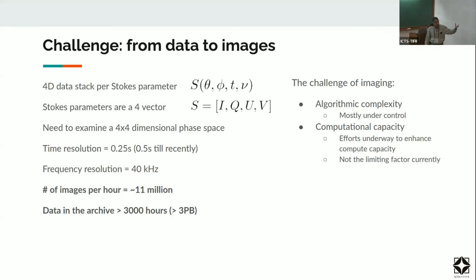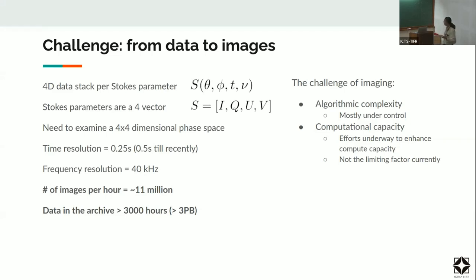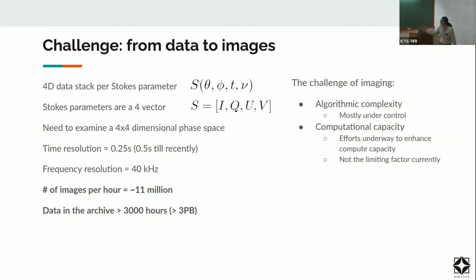So where do the challenges lie? Challenge one is going from raw telescope data to building the image. There are two aspects: algorithmic complexity, where I think we've reached a very good place and are currently state of the art; and computational capacity, which is intensive but not actually our limiting factor right now. What is limiting us is our ability to extract information from these images. Even with our existing telescope, we can make 11 million images an hour.